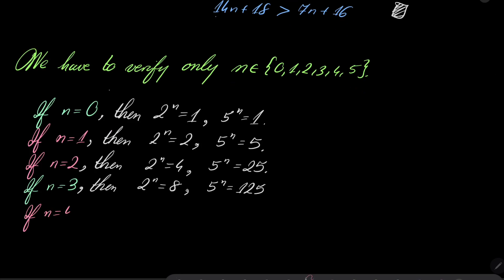If n equals 4, 5 to the power of n is 625, 6 plus 2 plus 5 is 13. 13 is not equal 16, so we don't have a solution.